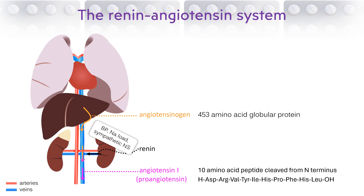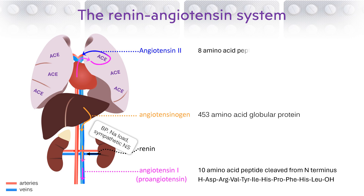As angiotensin 1 circulates in blood, it passes through the heart and out to the lungs, which contain a large amount of the enzyme ACE. As angiotensin 1 passes through the lungs, ACE cleaves it further into an octapeptide known as angiotensin 2. The last two amino acids at the carboxy terminus of angiotensin 1, histidine and leucine, are removed to form angiotensin 2.